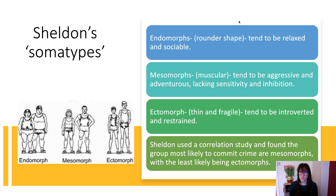Endomorphs are rounder and tend to be relaxed and sociable. Mesomorphs are muscular and tend to be aggressive and adventurous, lacking sensitivity and inhibition. Ectomorphs are thin and fragile, tending to be introverted and restrained. These are some of the most extreme stereotypes — write them all down, but think about what you make of these somatypes.